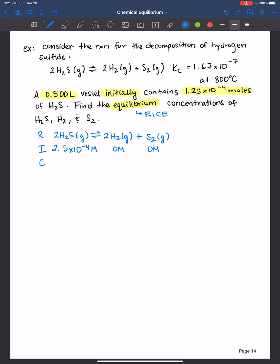Always look at the balanced chemical equation. It changes by minus 2x. What about hydrogen gas? Plus 2x and plus 1x for the sulfur gas. And then what we're most curious about is at equilibrium. That's what the question's asking for, finding the equilibrium concentrations. We do that by adding the initial plus the change.